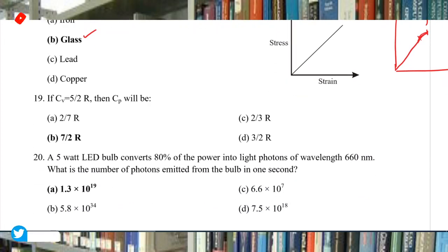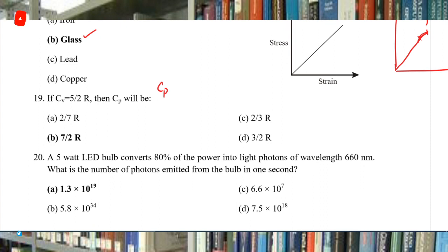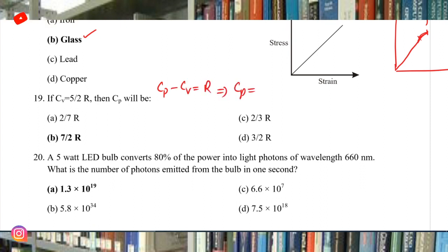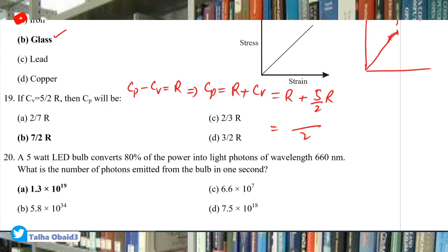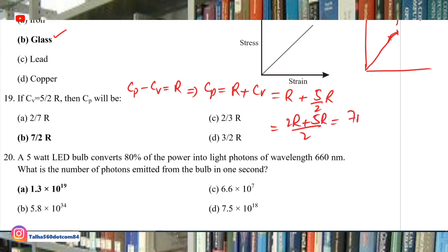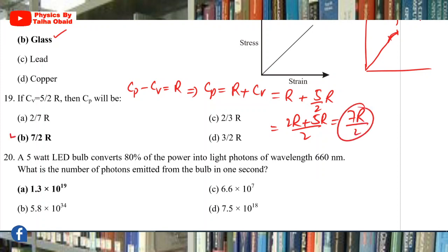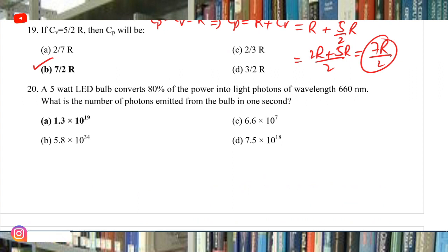Question 19: If C_v = (5/2)R, then C_p will be — we know C_p − C_v = R, so C_p = R + C_v = R + (5/2)R = (7/2)R. So beta is the right answer.